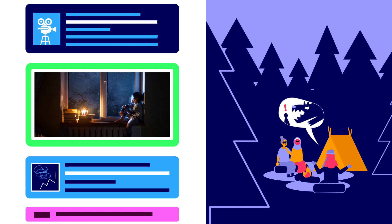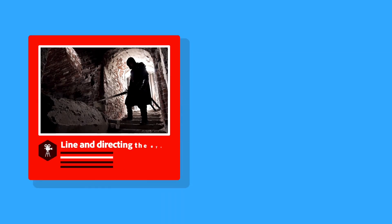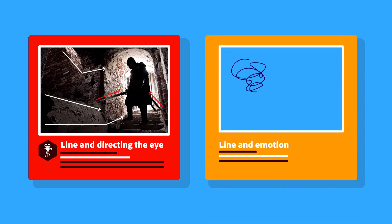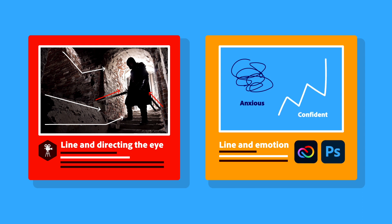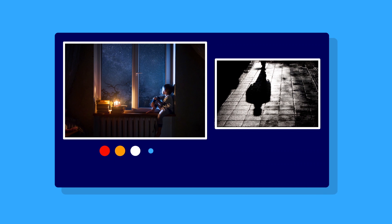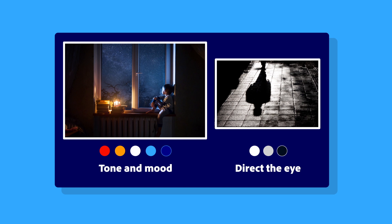These lessons encourage students to analyze the use of lines in movie stills and experiment with representing feelings and characters using single lines in a Creative Cloud Express post or Photoshop. They also consider how contrast can impact the tone and mood of an image and practice the use of shading to direct the viewer's eye.